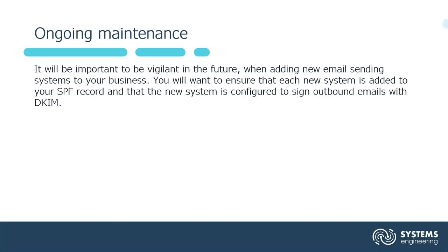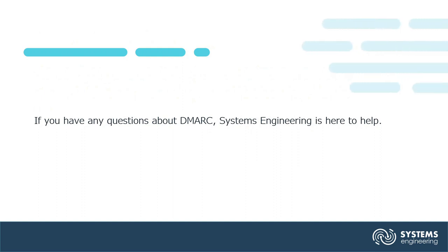It will be important to be vigilant in the future when adding new email sending systems to your business. You will want to ensure that each new system is added to your SPF record and that the new system is configured to sign outbound emails with DKIM. If you have any questions about DMARC, Systems Engineering is here to help. Thanks for watching.